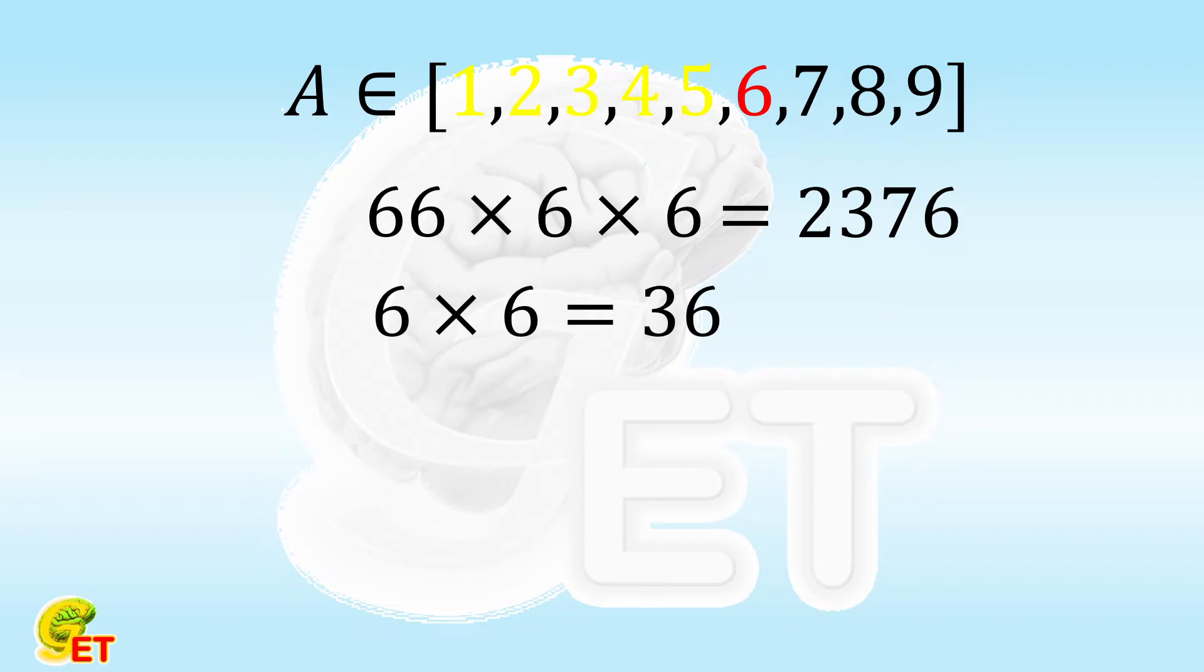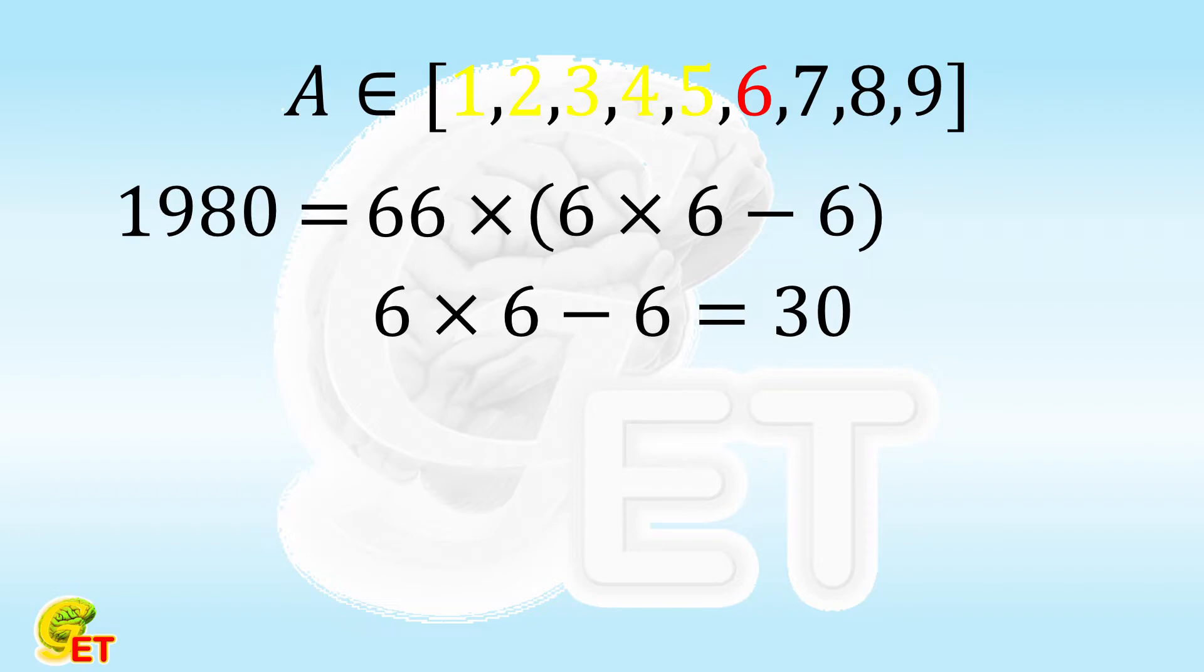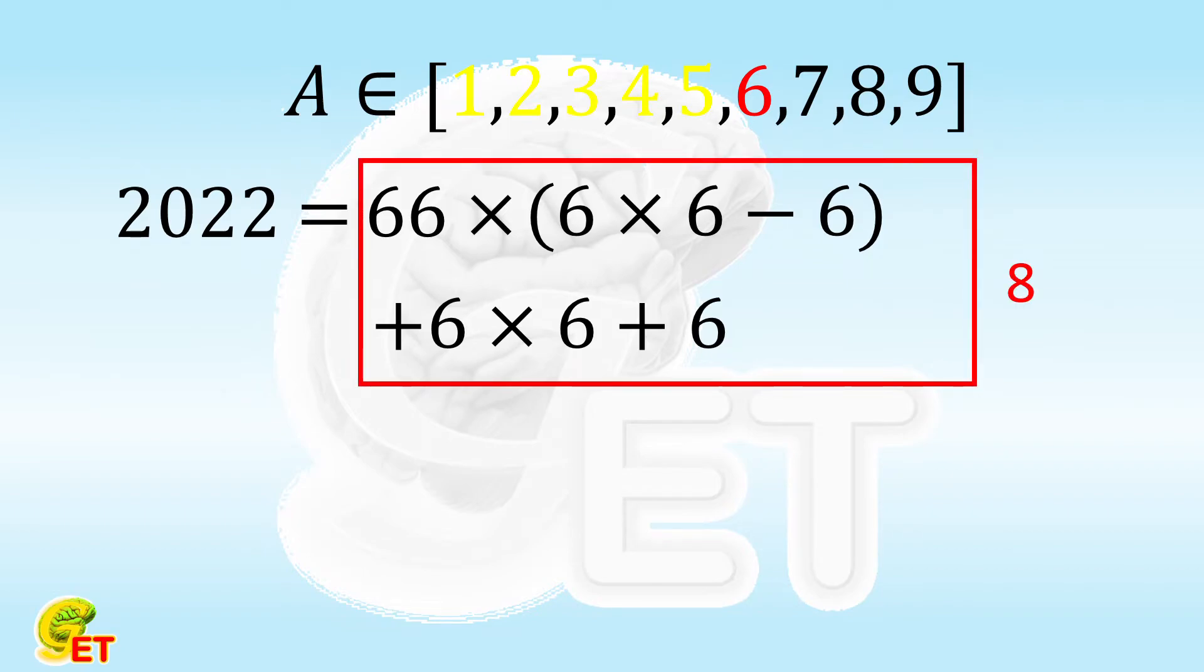And the result of the multiplication turns out to be 2376. Still a little bit bigger. What if we replace the 66 with 6 times 6 minus 6, which is 30? It becomes 1980. That is nicer. How big is its difference from 2022? The difference is 42, which is exactly 36 plus 6. So wonderful. Using 8 times of 6 fulfilled the task.